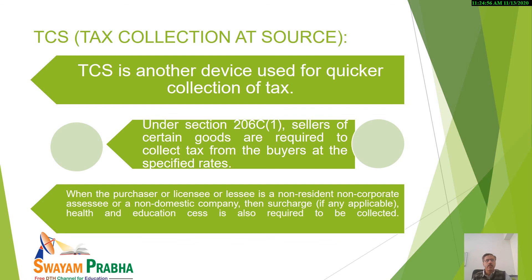The provisions regarding TDS and TCS are basically there: first, in order to collect the tax at the earliest; and secondly, in order to avoid, in order to check, in order to control the possibilities of tax evasion — so in order to avoid any leakage from the revenue of the central government such provisions have been implemented, and these are very much effective also.